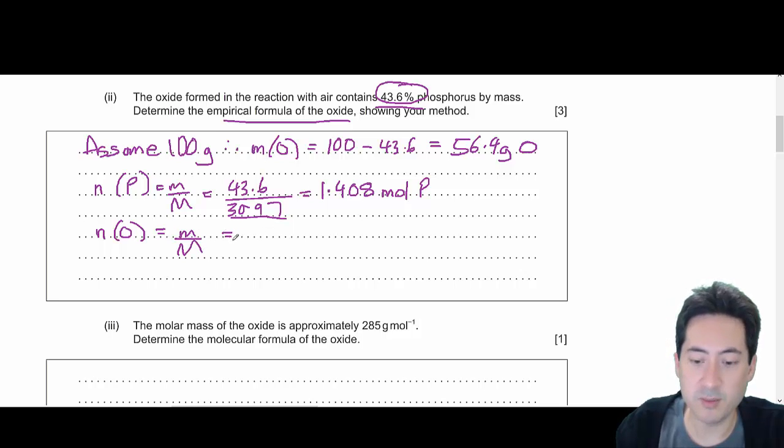So then the number of moles of oxygen, same deal, 56.4, go to your data booklet, and you've got 16.00. You plug that into a calculator, and you get 3.525 moles of oxygen.